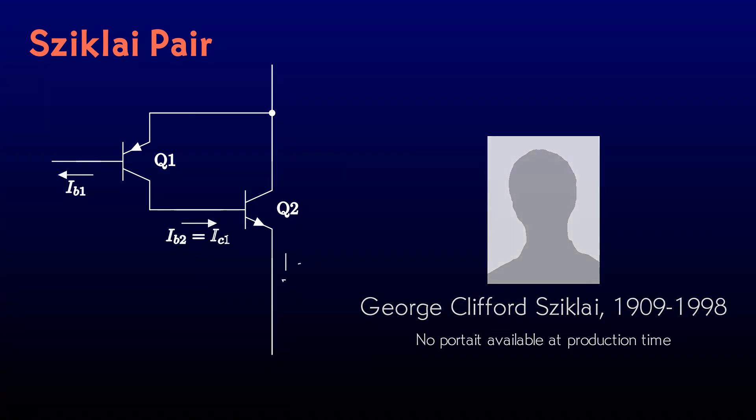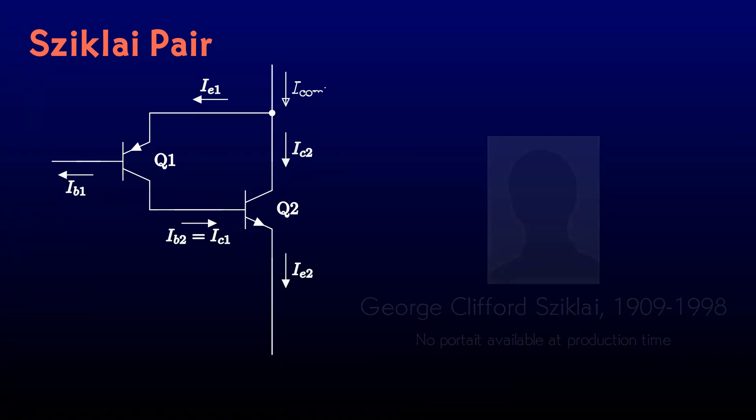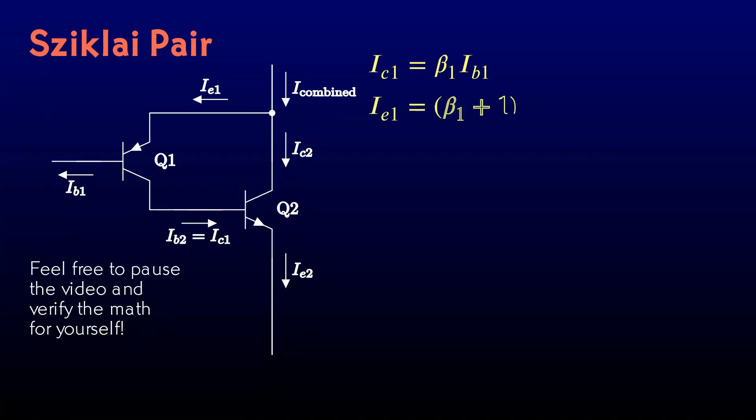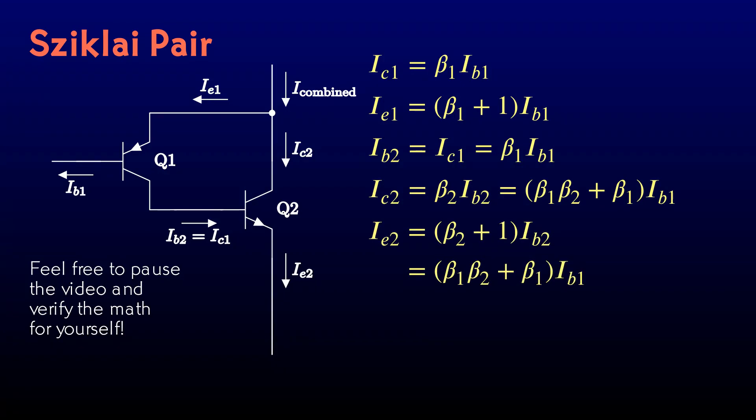We can analyze it the same way that we did the Darlington pair, by working through the currents one at a time. Since the math is pretty much the same as with the Darlington, I'll run through it on autopilot. Watch out, of course, that the currents in a PNP run the other way from the NPN that we most often use.